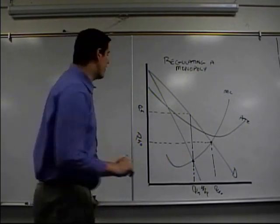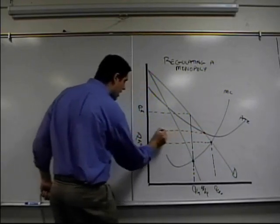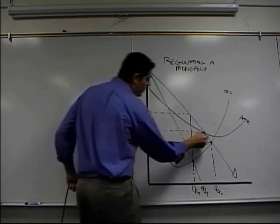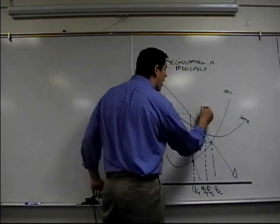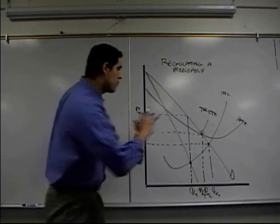Instead of doing that, they can do it at fair return. Fair return would be right here, where ATC hits the demand curve. This is a price ceiling at what's called fair return. Fair return, which would result in that quantity, basically means that the only spot in the whole graph where the total revenue equals the total cost. They break even.